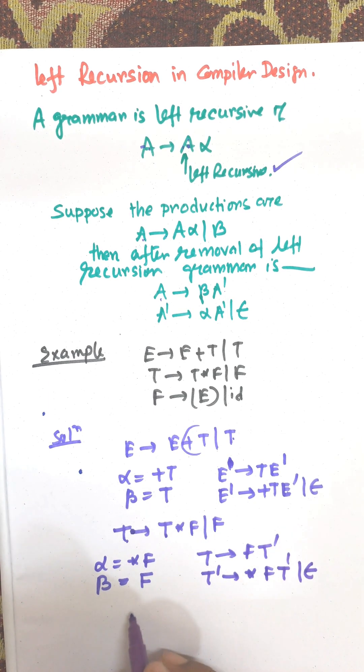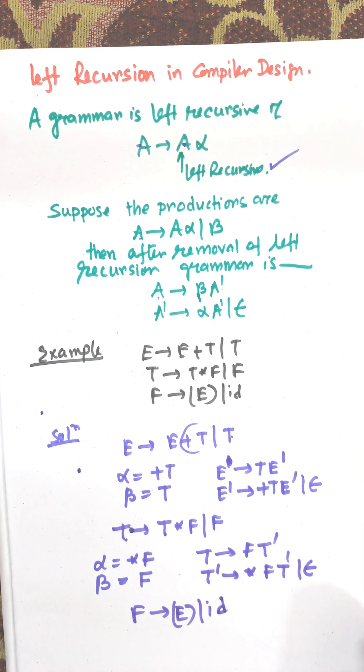And the last production, F → (E) | id, there is no left recursion. That will remain the same. F → id has no left recursive grammar, so this will remain the same.